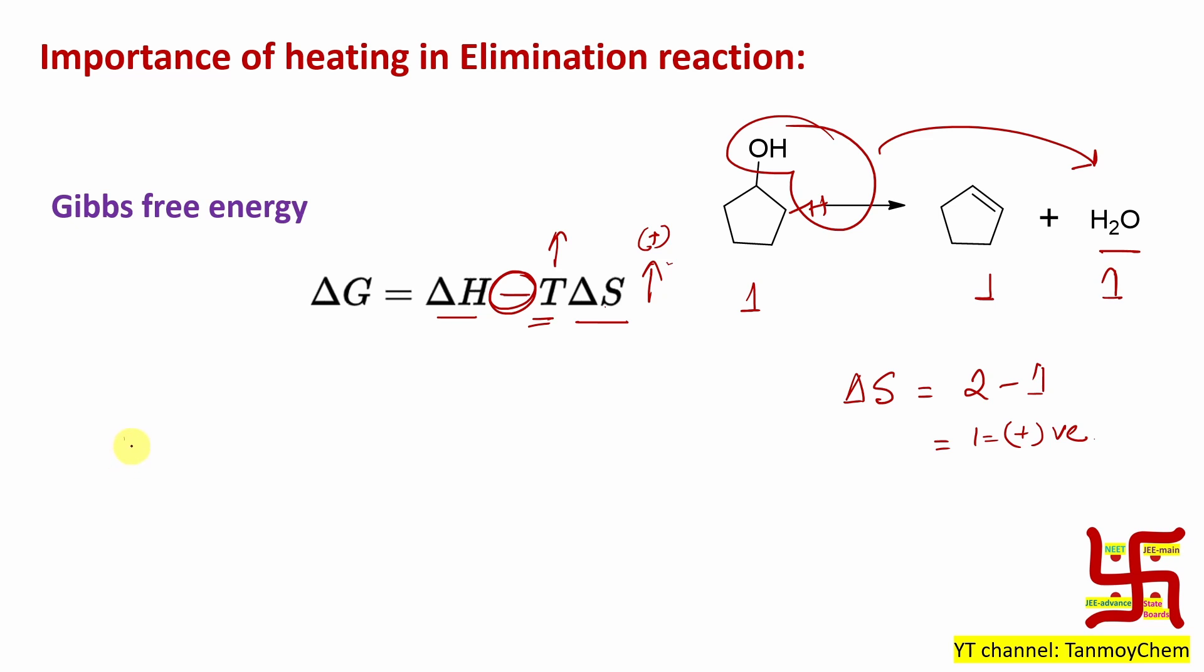For example, you have R-X, R-CH2-CH2-X, and you are doing elimination reaction. For example, alcoholic KOH. That time you see heating mentioned. When nucleophilic substitution given, I mean aqueous KOH, heating generally not mentioned. But for elimination reaction, heating mentioned. Why?